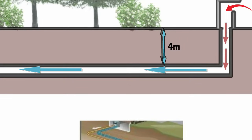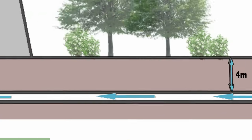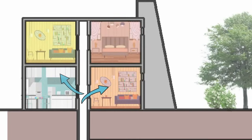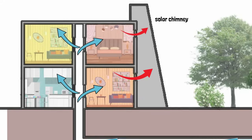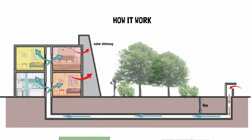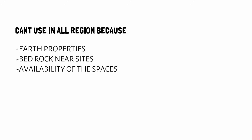The pipe size varies from 3 inch to 30 inch. A smaller diameter pipe requires more energy to move air due to friction in the pipe. After the air is treated, it goes inside the building. A solar chimney can also be added to extract hot air from the room. However, Earth Air Tunnel systems may not be suitable in all regions due to earth properties, bedrock near the project site, and availability of space.